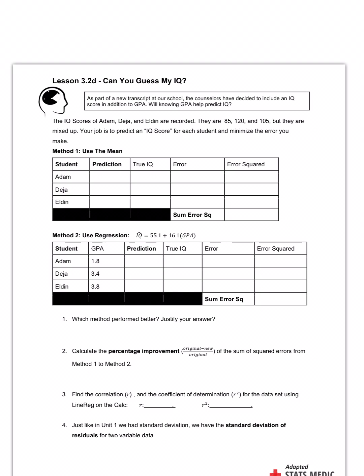Your job is to predict an IQ score for each student and minimize the error that we make. There's a couple methods here. If we use the first method, the method says use the mean of the three IQs. So when I average the three IQs, I get an x̄ of 103.3. If that's what we're using to predict their IQs, I'm gonna put that in my prediction box: 103.3.